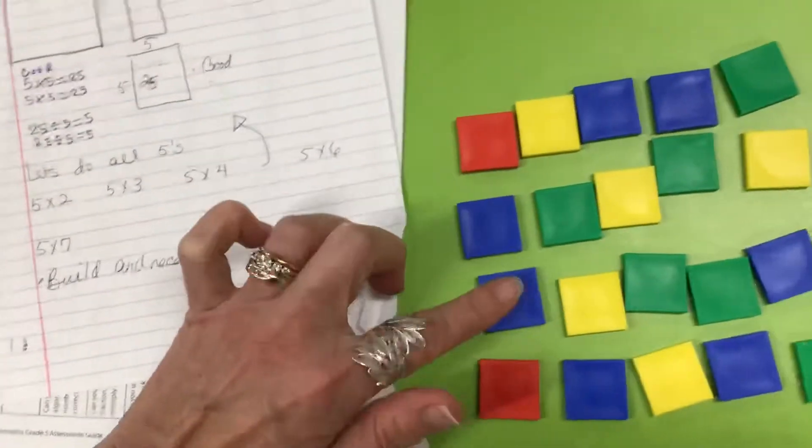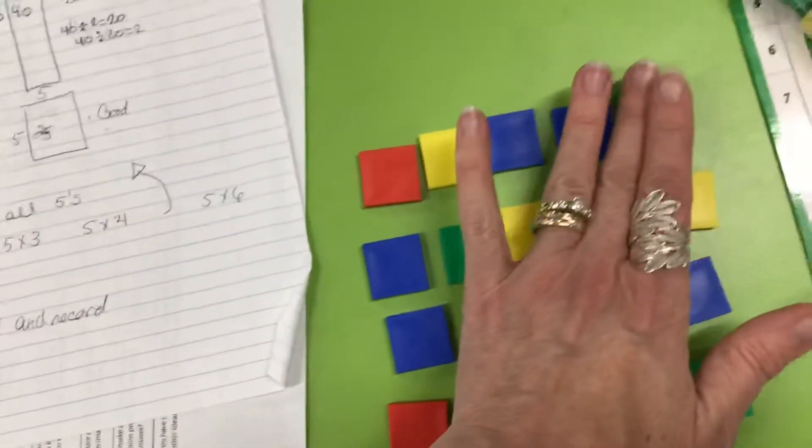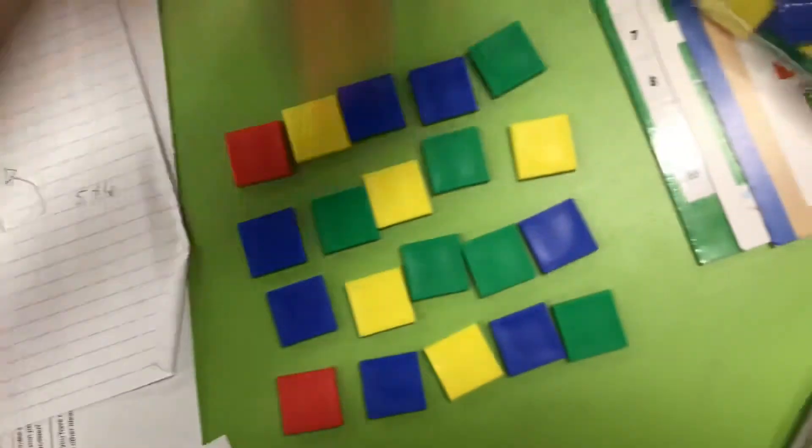1, 2, 3, 4. I have 4 rows. I have 1, 2, 3, 4, 5 columns. I need 1 more row.